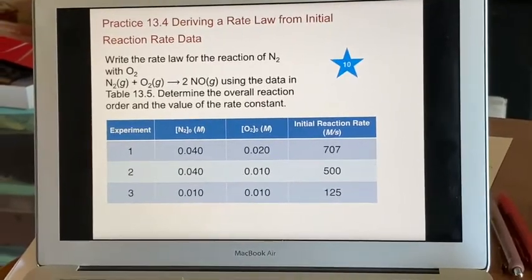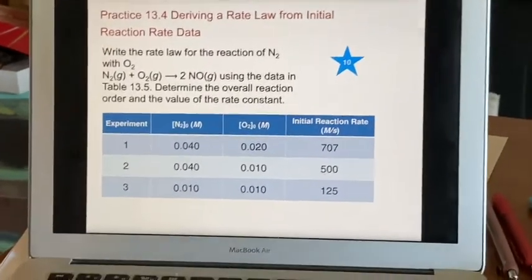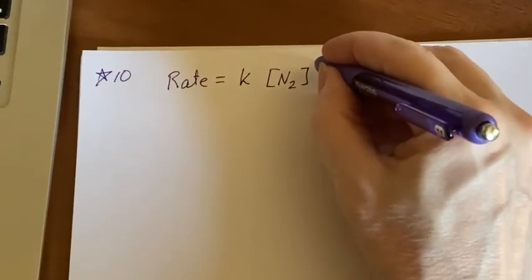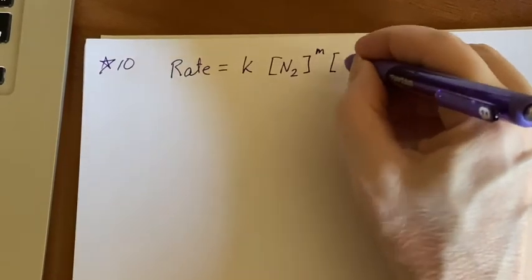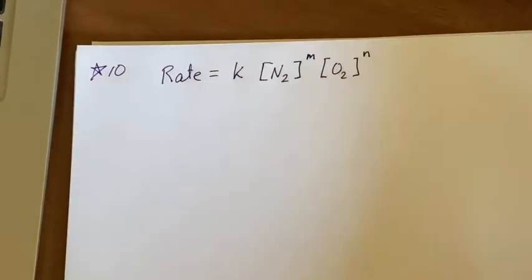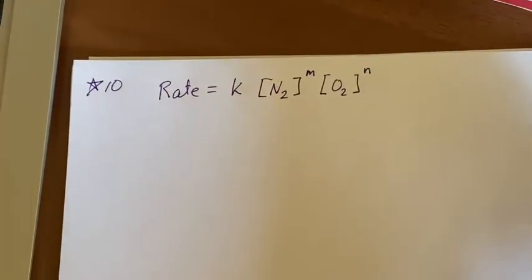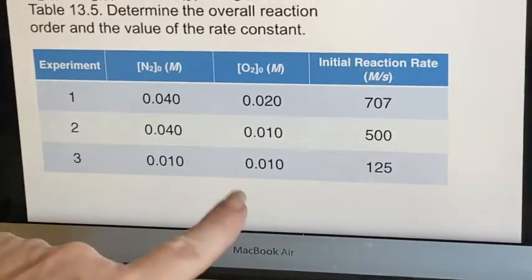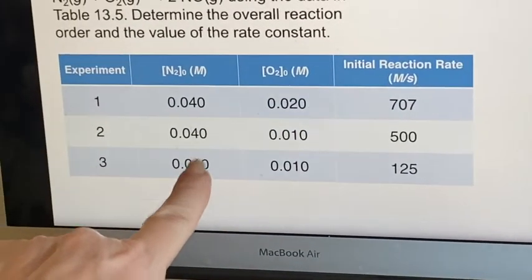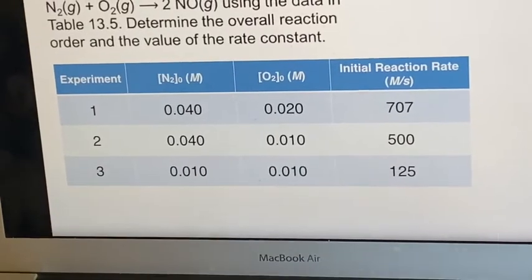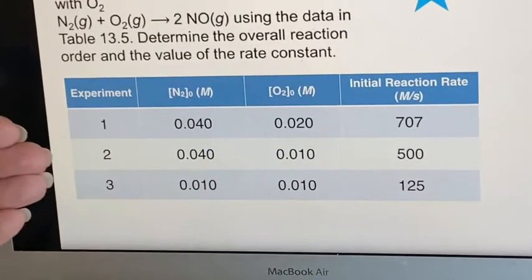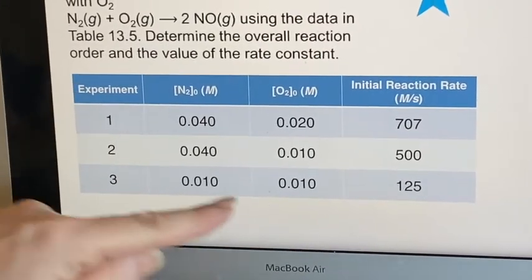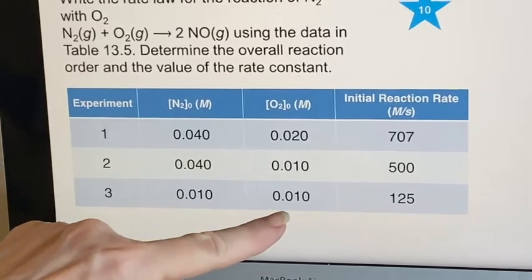the rate should be some rate constant K, and it will depend on the concentration of nitrogen raised to some power and the concentration of oxygen raised to a different power. Now I'm going to pick a pair. Now I would not want to pick experiment one and experiment three because that changed both the concentration of nitrogen and the concentration of oxygen. So in this case, I've decided I'm going to look at experiments two and three. I can see that the amount of oxygen was not changed.